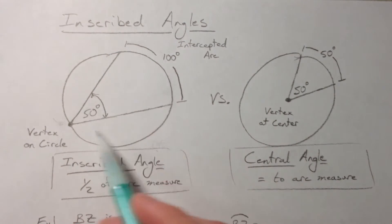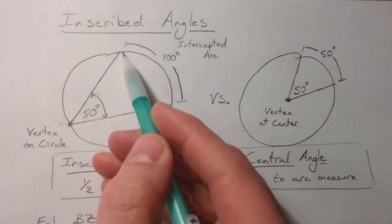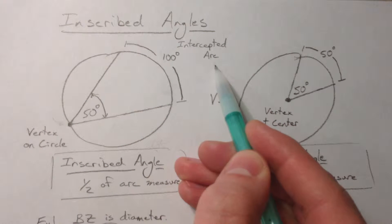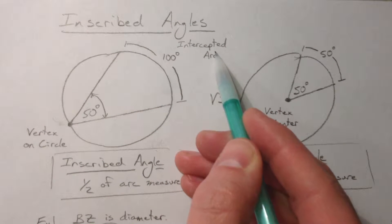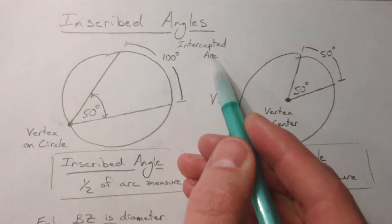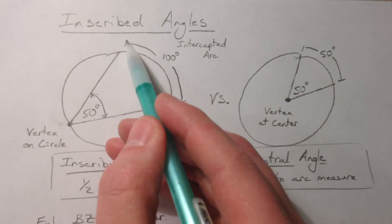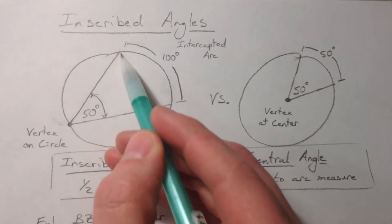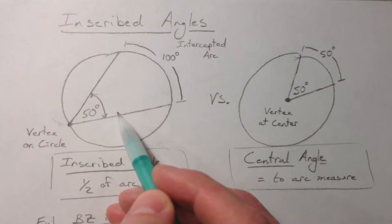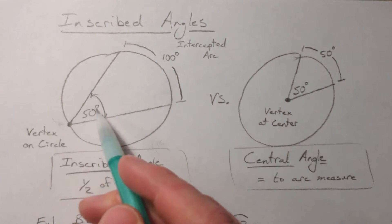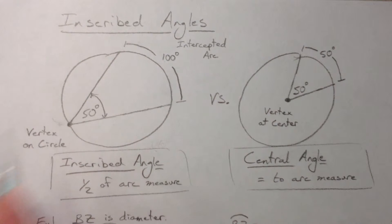it is always going to be half its intercepted arc. So that's another word we need to know. If this intercepted arc is 100 then the inscribed angle is 50. If the inscribed angle is 50 then the intercepted arc is 100. So you can double it or you can take half of it depending on which way you're going.